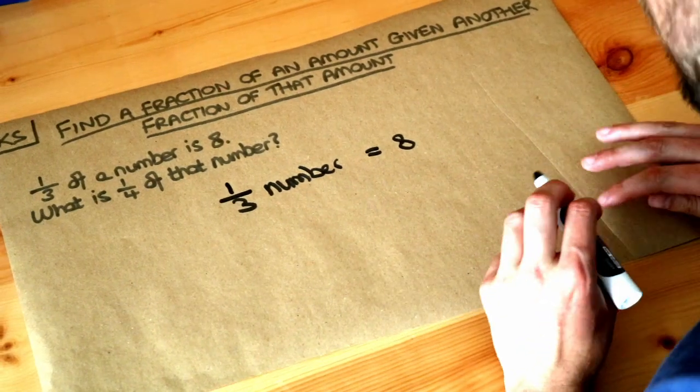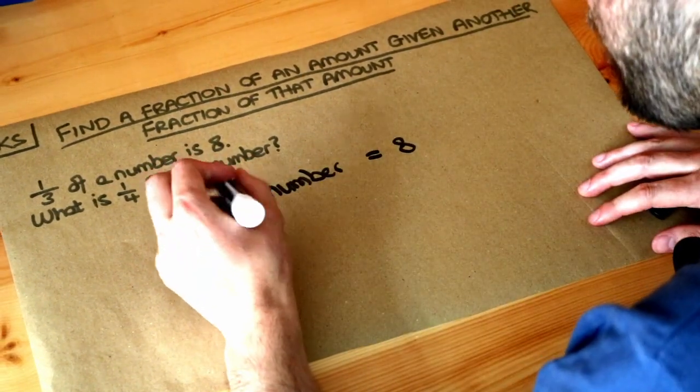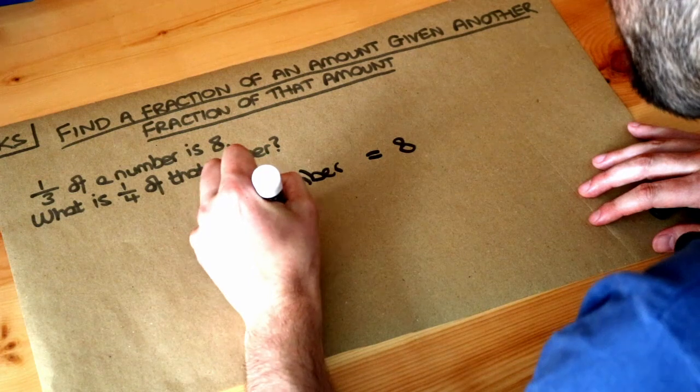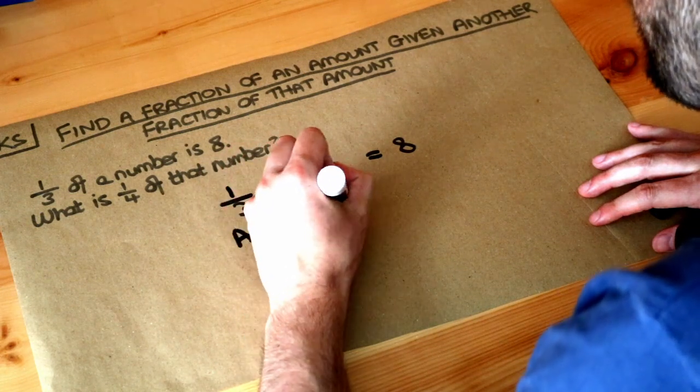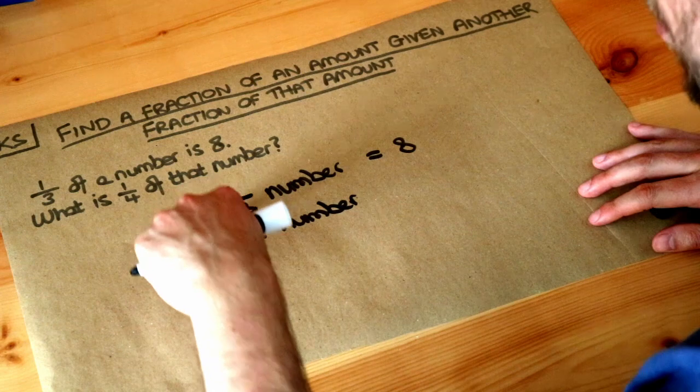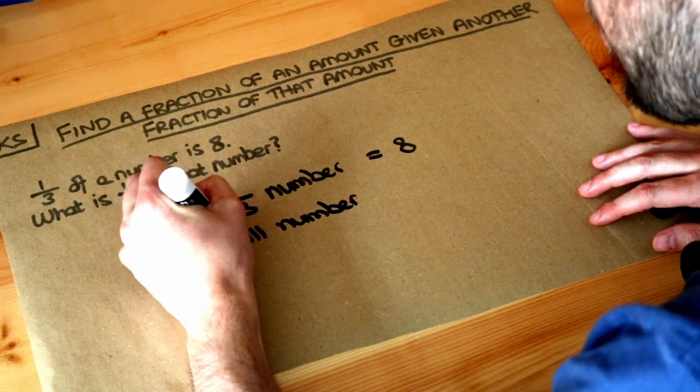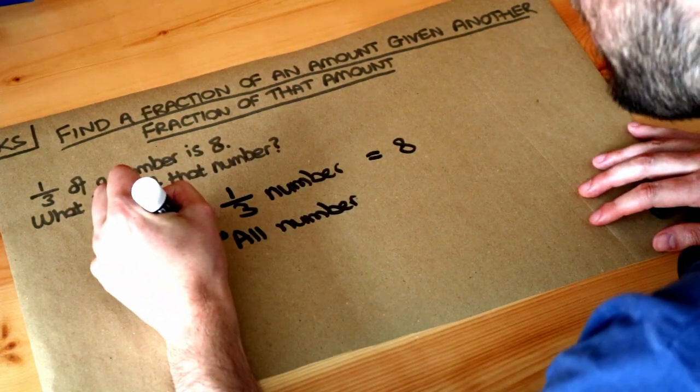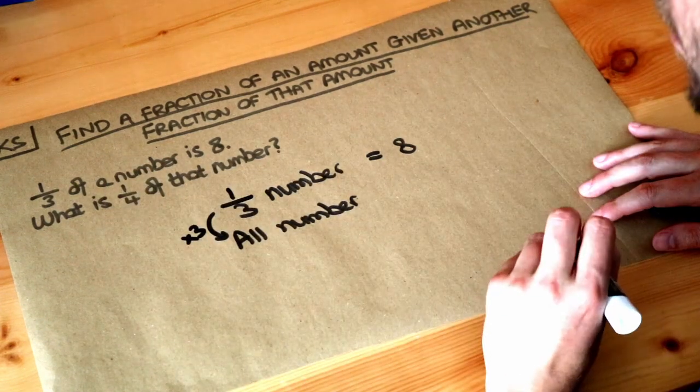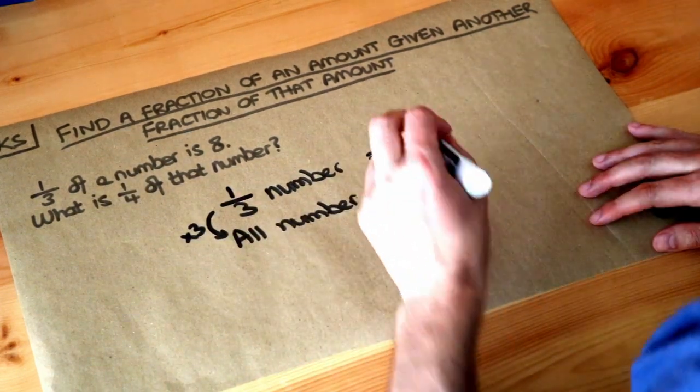And as before, we're going to work out what all of the number is. So all of the number, the original number. Well, if you've got a third of something and we want to get to all of it, well a third goes into a whole three times. So we're going to make it three times bigger. A third goes into a whole three times.